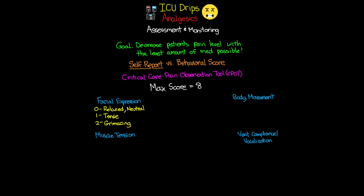For body movement, we again score 0, 1, or 2. A score of 0 is absent movements or a normal position. A score of 1 is called protection — slow, cautious movements where they're touching or rubbing a pain site, or seeking attention through movement. A score of 2 is restlessness and agitation: pulling at tubes, attempting to sit up, moving limbs and thrashing, not following commands, trying to get out of bed, or striking staff.